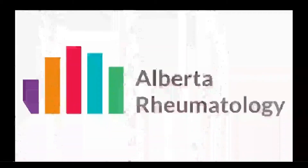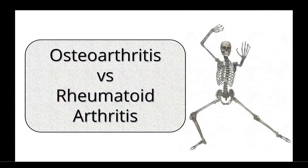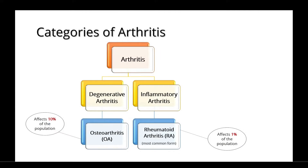Welcome to Alberta Rheumatology's discussion on the difference between osteoarthritis and rheumatoid arthritis. Arthritis can be broken down into two broad categories: degenerative arthritis, which is typically osteoarthritis, and inflammatory arthritis, in which rheumatoid arthritis is the most common form.